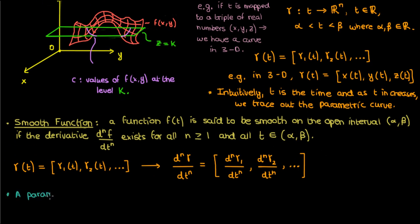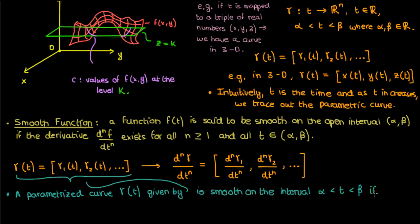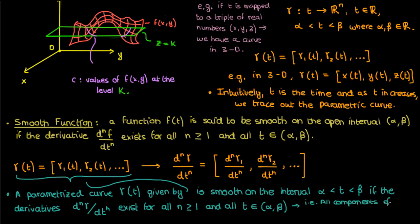Now a parametrized curve gamma of t given by this vector valued function is smooth between t equals alpha and t equals beta if all its derivatives exist between alpha and beta. And in order to make sure that this happens we need to ensure that all the components of gamma so the gamma 1 gamma 2 gamma 3 all of them are infinitely differentiable.